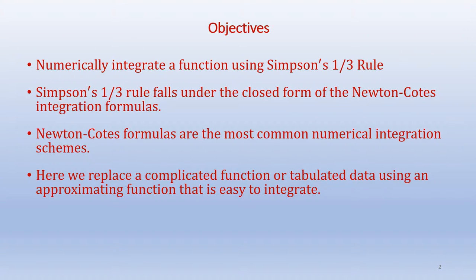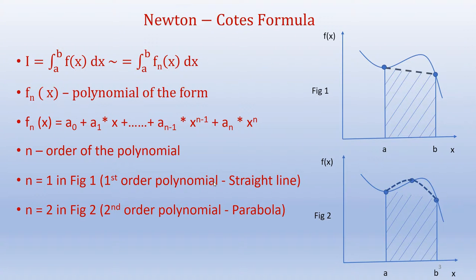Our objectives are to integrate numerically a function using Simpson's one-third rule. Simpson's one-third rule, like the trapezoidal rule, falls under the closed form of the Newton-Cotes integration formulas, which are the most common numerical integration schemes used. Here we replace a complicated function or tabulated data using an approximating function that is easy to integrate.